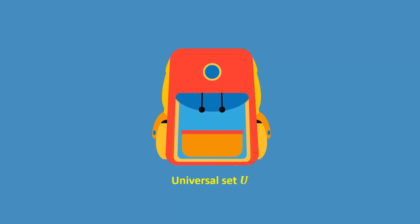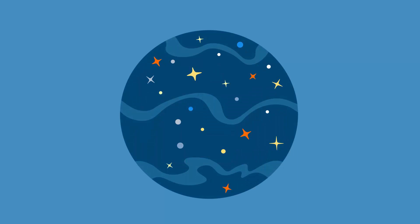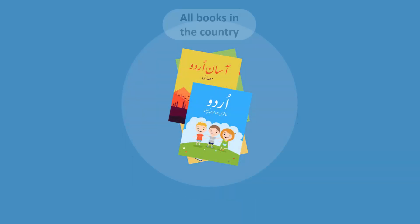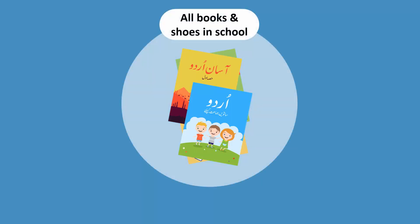For instance, the universal set shouldn't contain everything in the universe, since we are talking about books in this case. Also, the universal set shouldn't be the set of all books in the country, or the set of all books and shoes in the school.